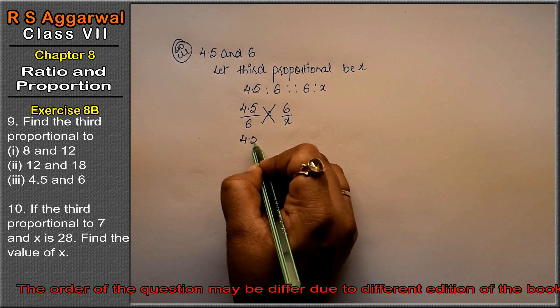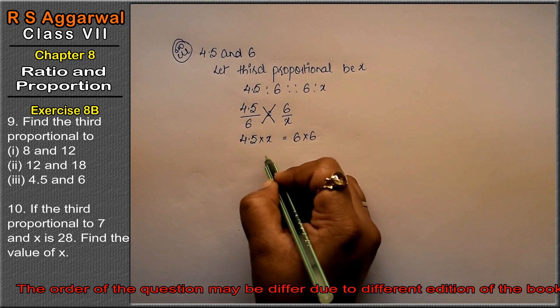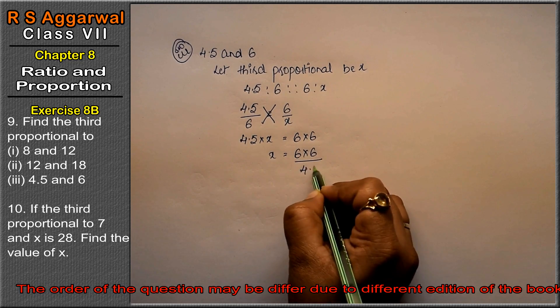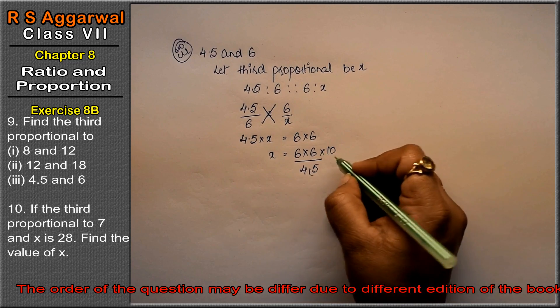So what can we do? 4.5 upon 6 equals to 6 upon x. Cross multiply. So this is coming - 4.5 into x equals to 6 into 6. So how much is the value of x? 6 into 6 upon 4.5. You have to make a point. It's on the value of 10.